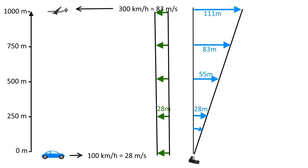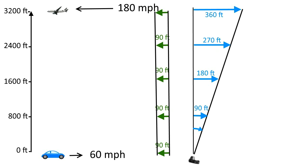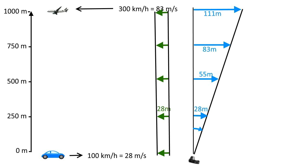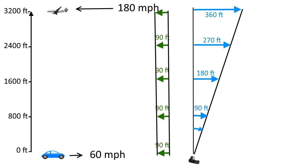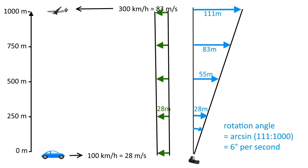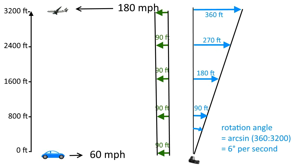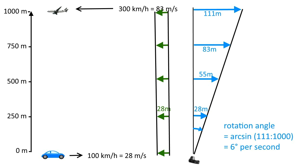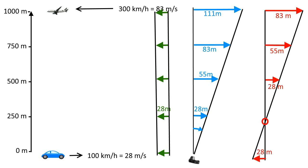The result of this camera rotation is that the point on the image moves 28 meters to the right at a distance of 250 meters, 55 meters in 500 meters, 83 meters in 750 meters, and 111 meters in 1000 meters. That was exactly the intention. We turn 6 degrees in one second. The green arrows are the movement of the car, the blue arrows the movement of the camera, and we can just add it up.